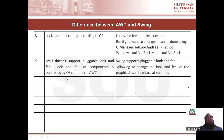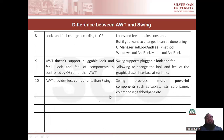In AWT, look and feel of components is controlled by the OS rather than AWT. Next: AWT provides fewer components than Swing. Swing provides more powerful components such as tables, sliders, scroll panes, color chooser, tabbed pane, etc. Swing package has a wide range of components — lots of useful controls as compared to AWT.